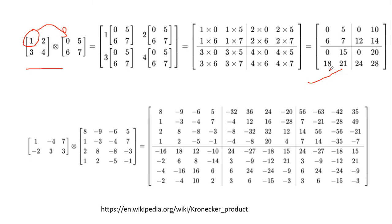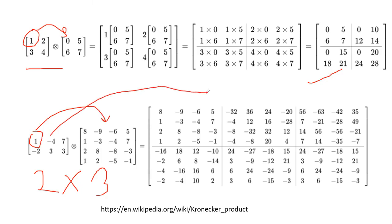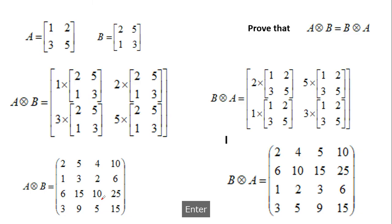In a second example, a 2×3 matrix is Kronecker-multiplied with a 4×4 matrix. Each element of the first matrix multiplies all elements of the second. For example, −4 times all elements gives entries like −32, +36, and so on. Then 7 multiplies all elements of the second matrix, producing the corresponding block section. This gives the complete Kronecker product.